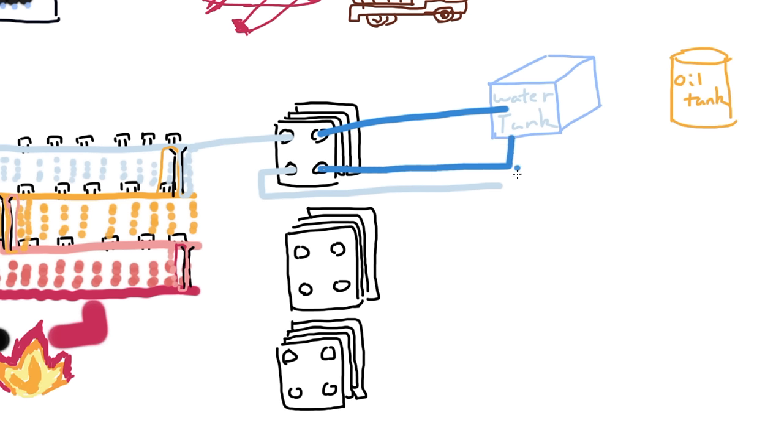However, for jet fuel and diesel, it is too hot to be just cooled by water. So we'll first pass through a plate exchanger to be cooled by thermal oil, and then another plate exchanger to be cooled by water.